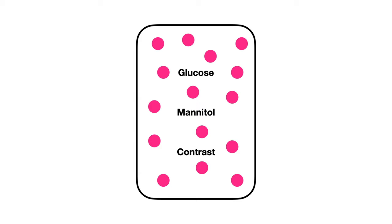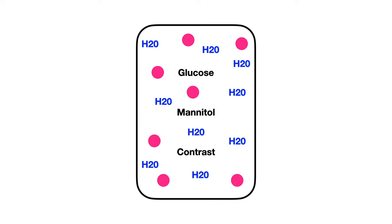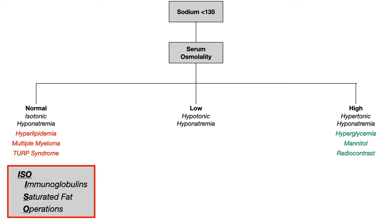When glucose, mannitol, or contrast is introduced, there is more stuff in the blood vessel. When water sees more stuff, water flows to follow it — that's just how water works. So water comes in, dilutes the sodium, and therefore you get hyponatremia. It's hypertonic because there's lots of stuff in the blood, but sodium is measured low because water has diluted it.